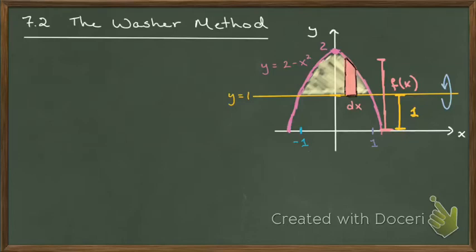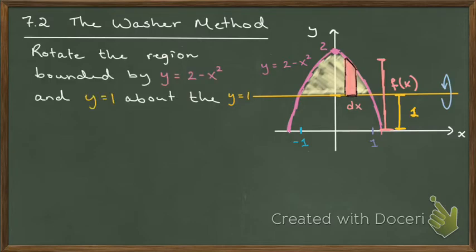In this video, we're going to take a look at what we call the washer method. I alluded to this at the end of the last video talking about the disk method. I had this specific example up there as well — y equals 2 minus x squared and y equals 1, the region bounded by both of those curves, rotated about the line y equals 1. And I ended the last video asking: what happens if we rotate the region bounded by those two curves about the x-axis?